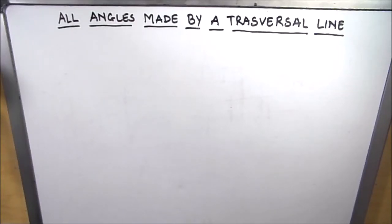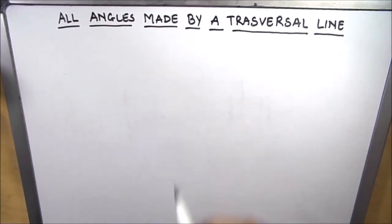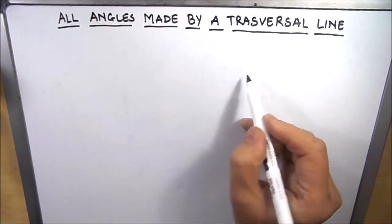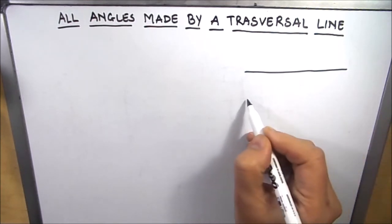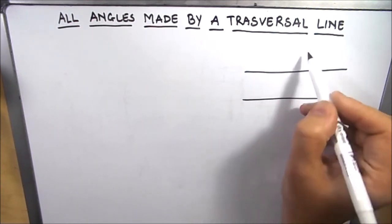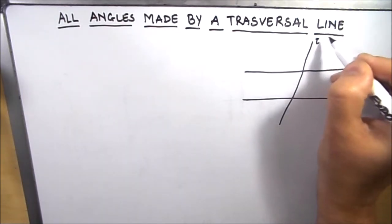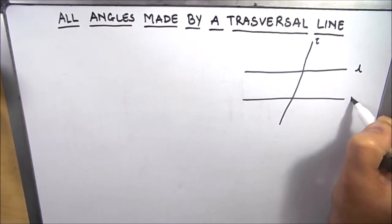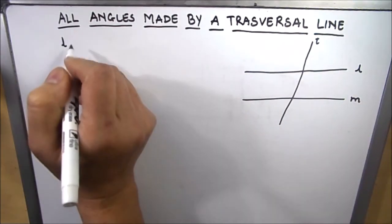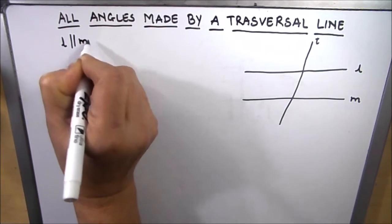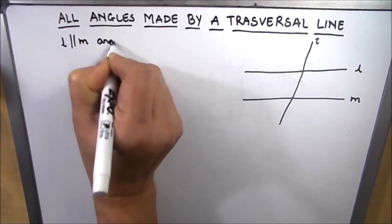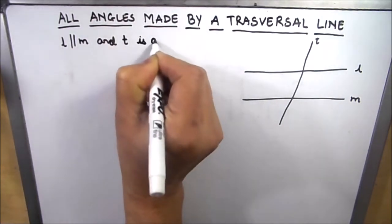Hello everyone. In this video we are going to learn about all the angles which are made by a transversal line when it intersects two parallel lines. Let's get started by making two parallel lines and then intersecting them with a transversal line. T is our transversal line and L and M are parallel lines, where L is parallel to M.